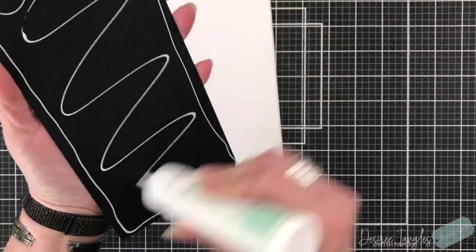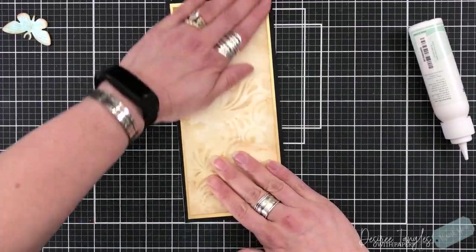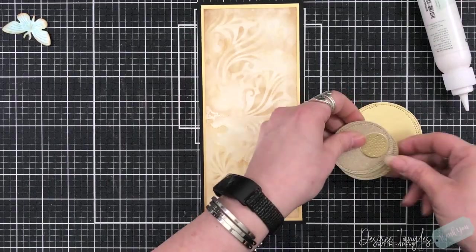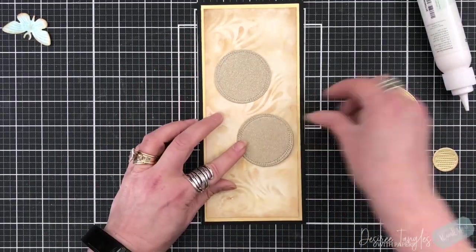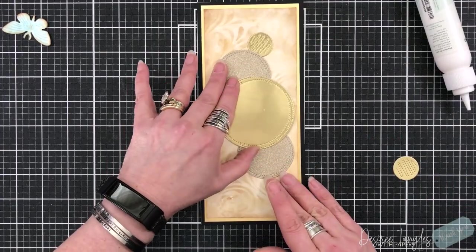I'm putting this onto my card base. Again it's cut eight by nine but then it's scored along the eight inch side at four inches, so now it's a four by nine.